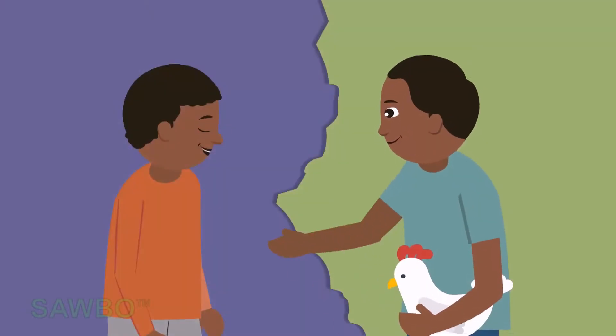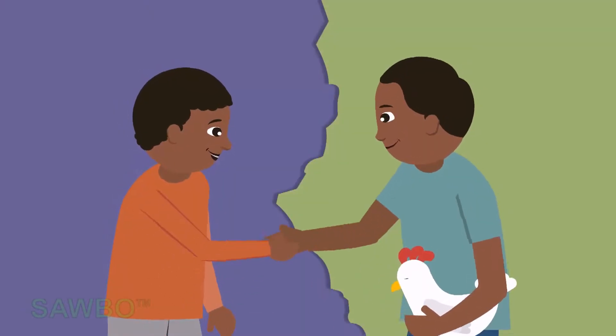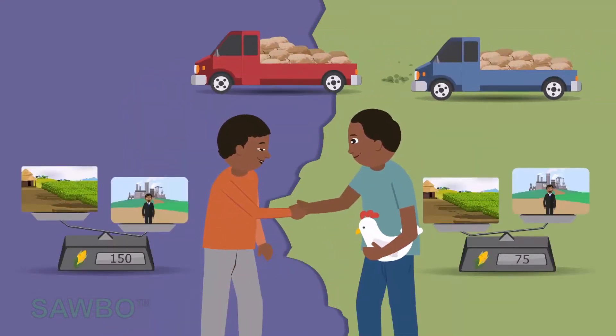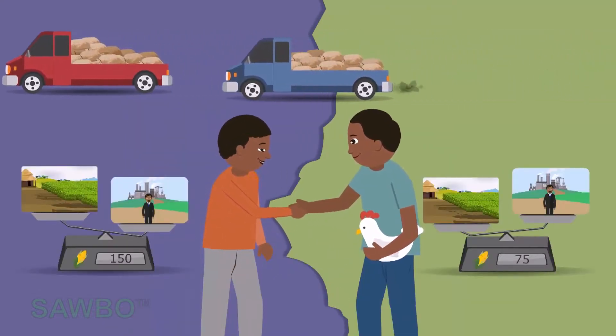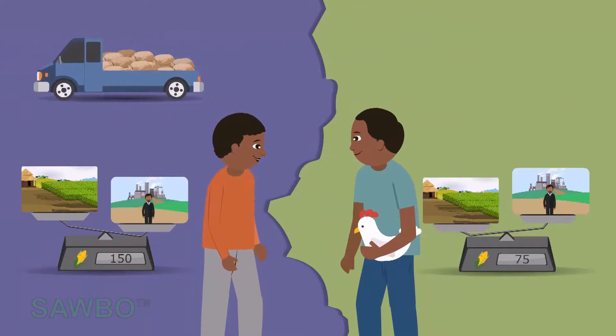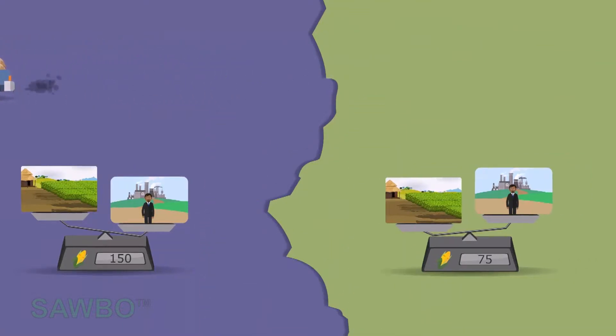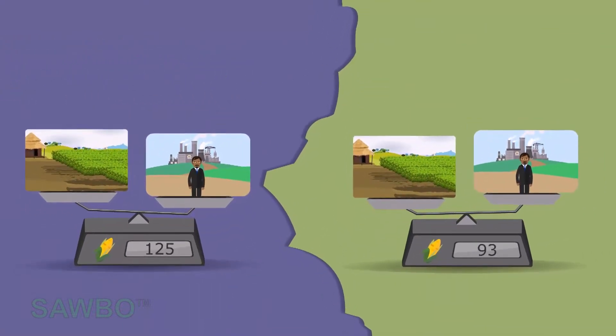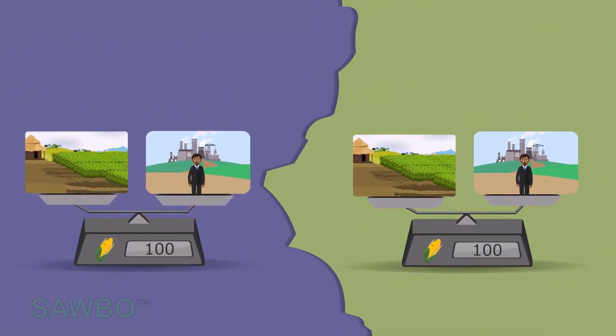A trader decides to buy cheap maize from a neighboring country and sell it in his own country. This extra supply of maize causes the price to level out between both countries.